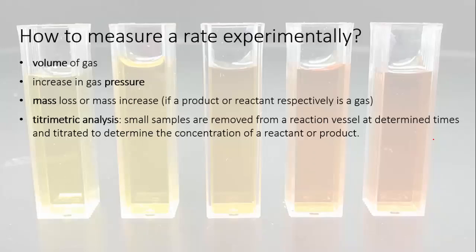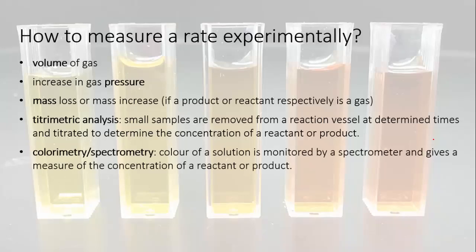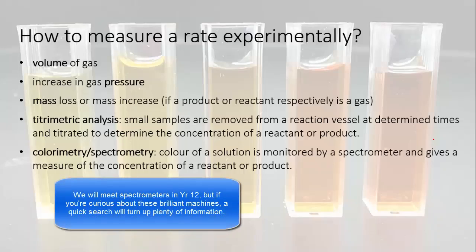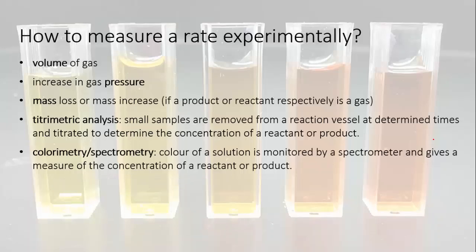If you have a reactant or product that's colored or absorbs ultraviolet light, then you can track its presence using spectrometry. A spectrometer shines a beam of light through your sample and detects how much of that light is absorbed. The absorbance of the sample is directly proportional to the concentration of your chemical, so that can be a very convenient way of detecting concentration.